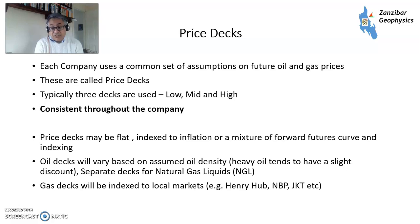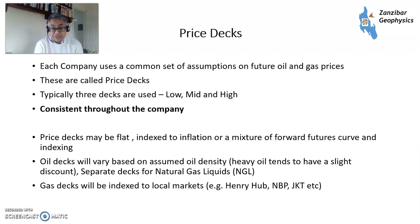Price decks could be flat — let's say, for sake of argument, $50 flat into eternity — or indexed to inflation, or a market forward curve from the futures market. There would be variations within the oil price deck depending on the density of the oil: heavy oil tends to have a slight discount. There will be separate decks for natural gas liquids, which have different values, and gas decks indexed to local markets such as Henry Hub, NBP, JKT, et cetera. And LNG prices. I have a video 'When a BOE is not a BOE' which explains the different types of prices.